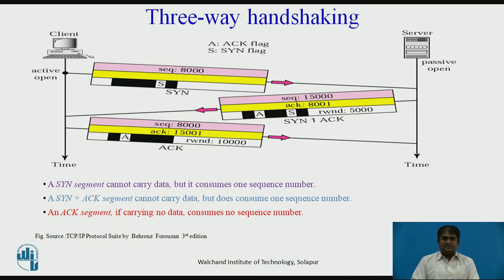The process starts with the server. The server program tells its TCP that it is ready to accept a connection from any machine in the world. It cannot make the connection itself. The client program issues a request for an active open. A client that wishes to connect to an open server tells its TCP to connect to a particular server. TCP can now start the three-way handshaking process.